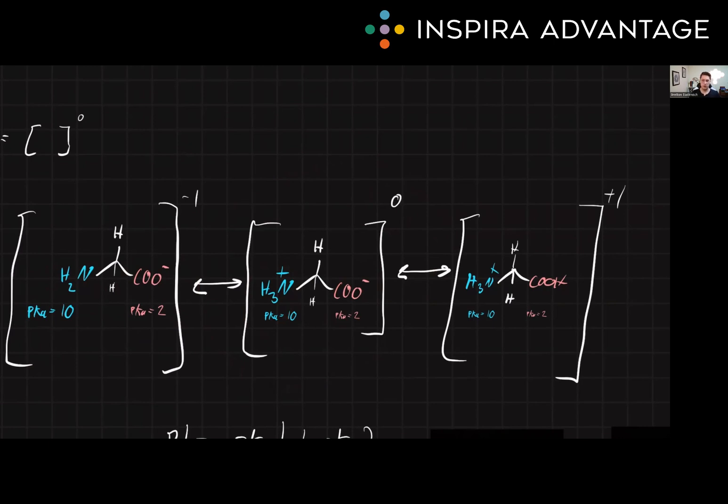To determine the isoelectric point of an amino acid, we can use the pKa values of its ionizable groups. The pKa is the pH at which half the ionizable groups are protonated and half are deprotonated. For example, there are two ionizable groups in glycine, the amino group and the carboxyl group. The pKa of the amino group is around 10, while the pKa of the carboxyl group is around 2. And these are numbers you will want to have memorized for the test.